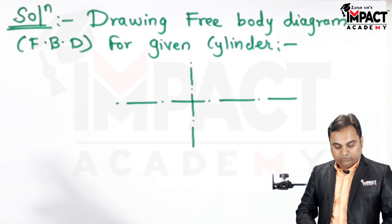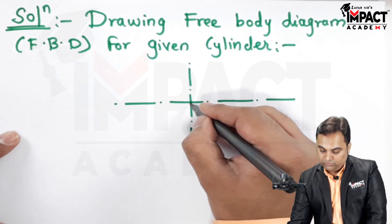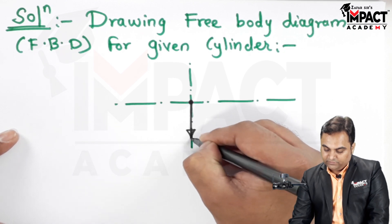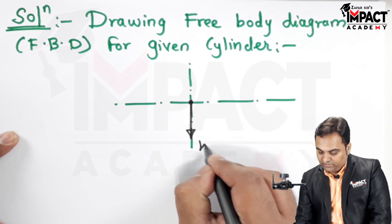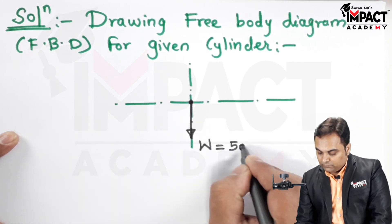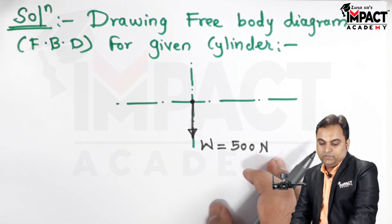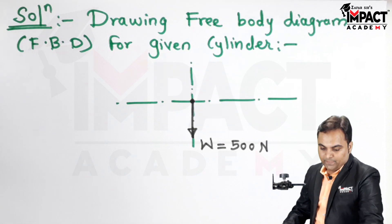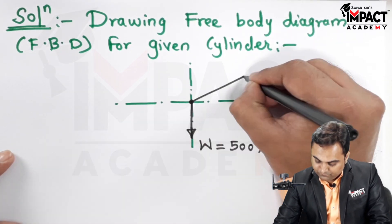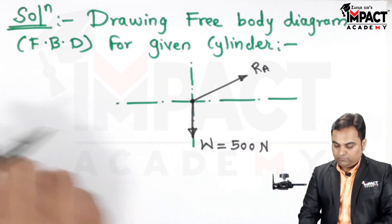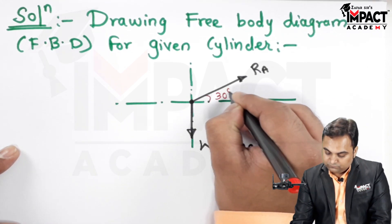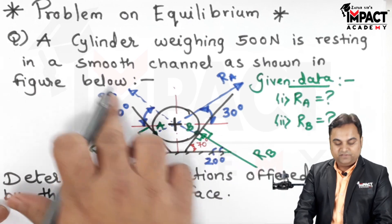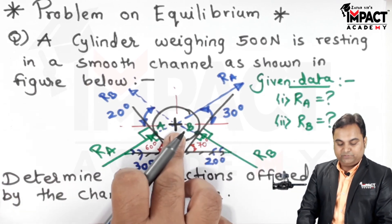Since the weight of the cylinder would be acting downward, so I am taking this as the CG of the cylinder and from there the weight is acting, its value is 500 Newton. Next RA has been extended from this center having 30 degree with horizontal. Then RB is extended having 20 degree with respect to horizontal.